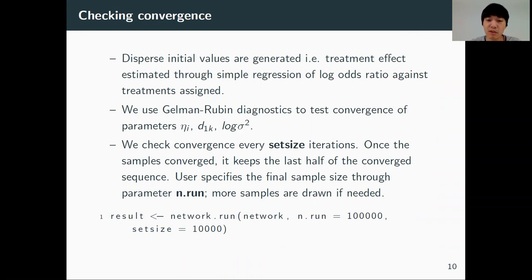We check convergence every set size iteration, and once the samples are converged, it keeps the last half of the converged sequence. If the user requires more sample size, we can specify through the parameter called n.1.